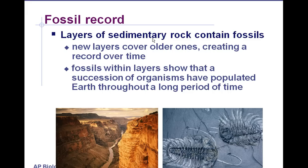Igneous rock comes from cooled-down magma. Metamorphic rock is any rock that's been under heat and pressure and partially melted. Both igneous and metamorphic rock do not make for good fossil preservation because they involve high-temperature processes. For example, if a T-Rex fell into a lava pit, there wouldn't be much left once that lava cooled into igneous rock. Sedimentary rock is the gentlest formation — basically glued-together pieces of tiny rocks.